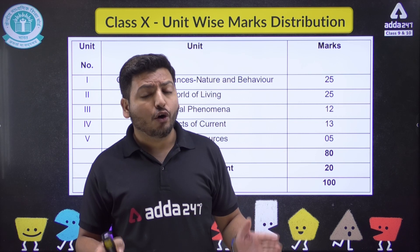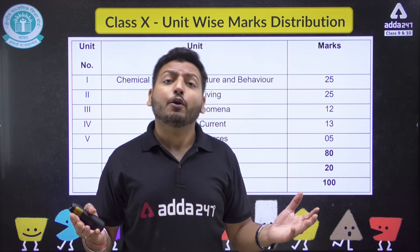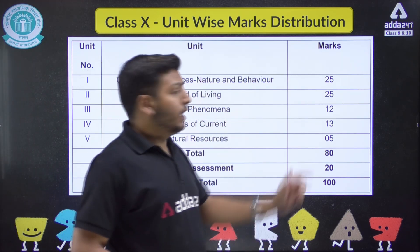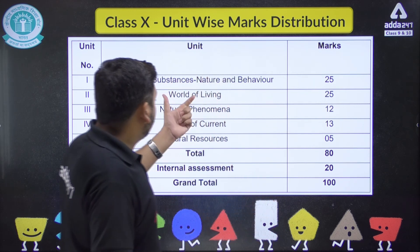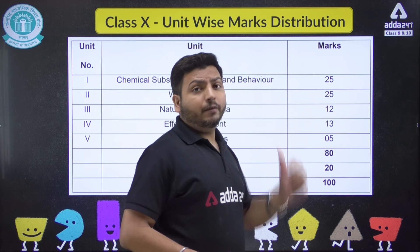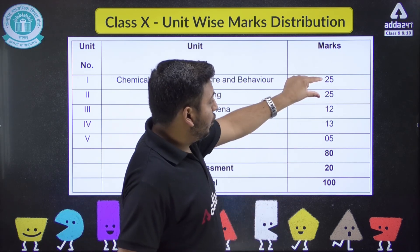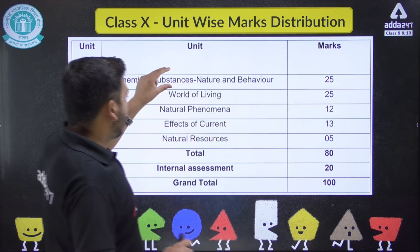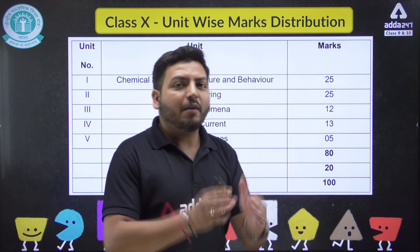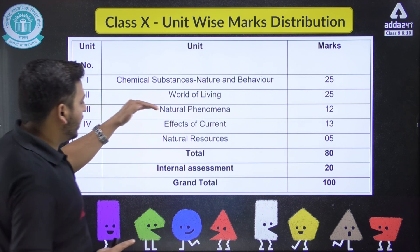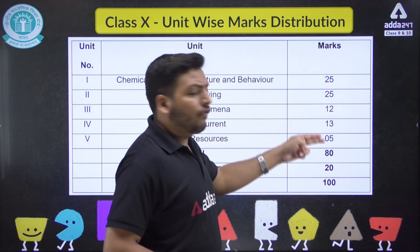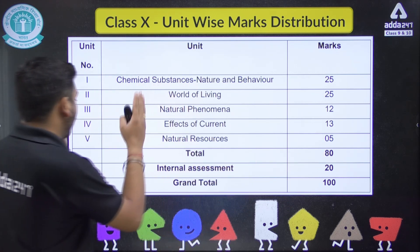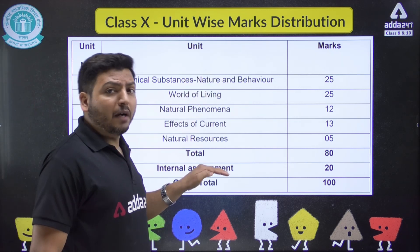Don't be confused between units and chapters — one unit contains many chapters. The first unit is Chemical Substances, Nature and Behavior, carrying 25 marks out of 80. The second unit, World of Living, also carries 25 marks out of 80. Together these two units account for 50 marks. The third, fourth, and fifth units carry 12, 13, and 5 marks respectively, totalling 80 marks. So you have to cover all 5 units.